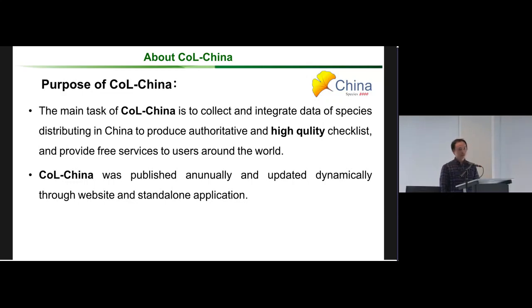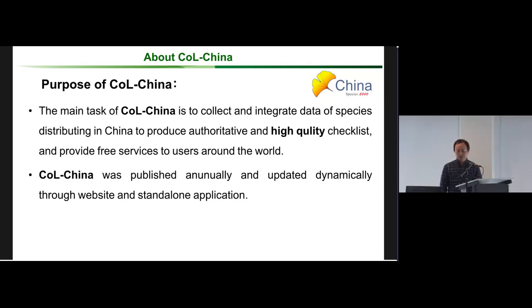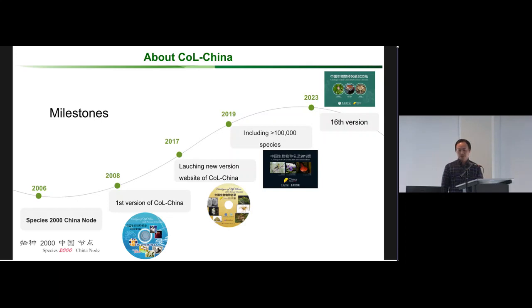The CBD also requires high quality and available data. So our purpose for COL China is to collect and integrate data of species distributing in China, and to produce an authoritative and high quality checklist and provide free services to users around the world. COL China was published annually and updated dynamically through websites and standalone applications.